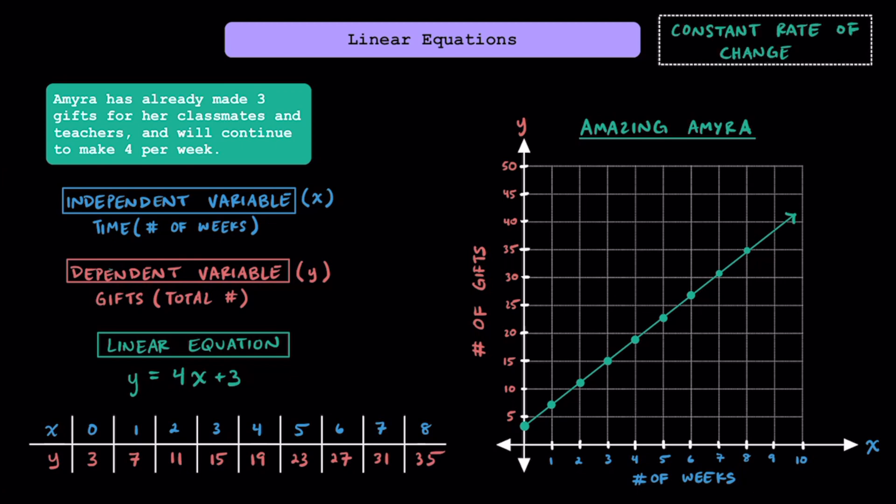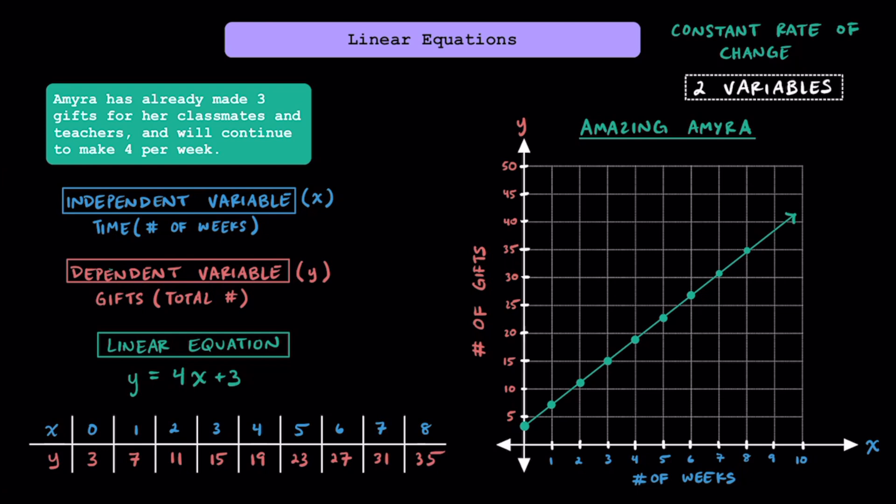Linear equations represent relationships where we have a constant rate of change. Instead of having one variable, we're now going to start looking at equations that have two variables. When dealing with equations with two variables or two unknowns, as one of the variables changes, the other one will as well. Let's take a look at an example or situation that's going to represent a linear equation.